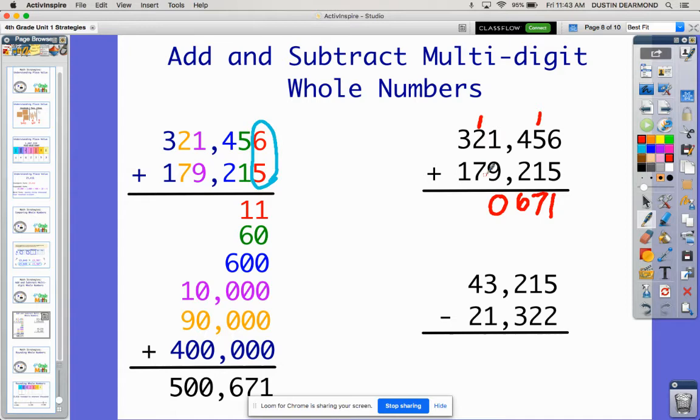So now in my 10,000 place, I have the 70,000, the 20,000, and now I have another group of 10,000 that I brought over when I had to regroup from the thousands place. So 7 and 3 more is another group of 10.